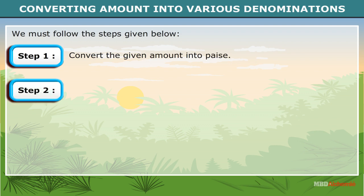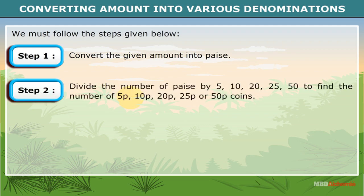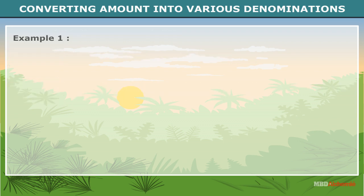Step 2: Divide the number of paise by 5, 10, 20, 25, or 50 to find the number of 5 paise, 10 paise, 20 paise, 25 paise, or 50 paise coins. For example, convert 32.50 rupees into the following denominations.